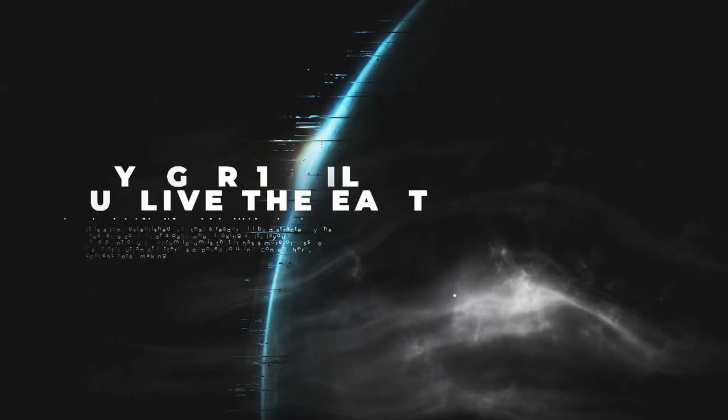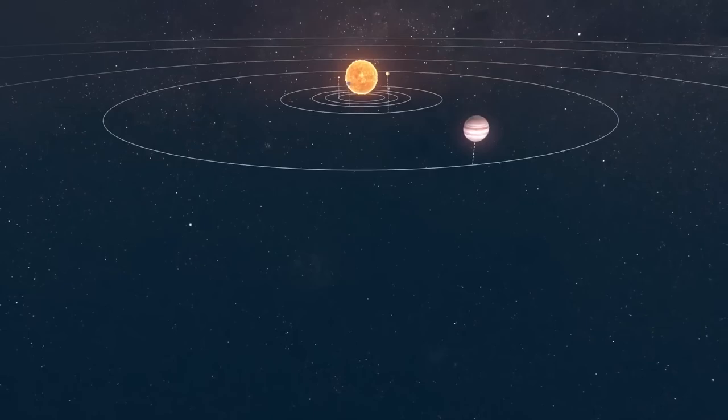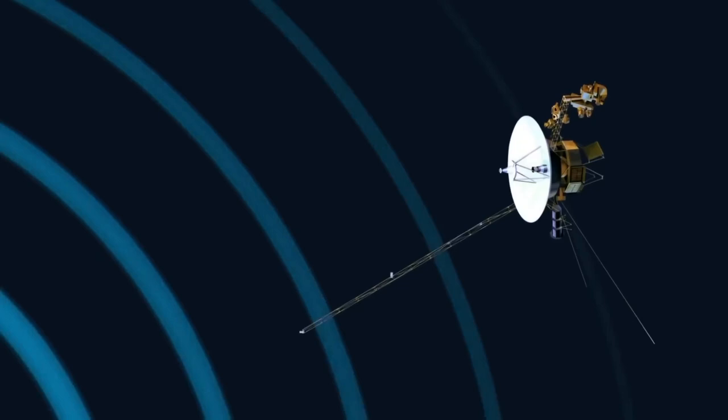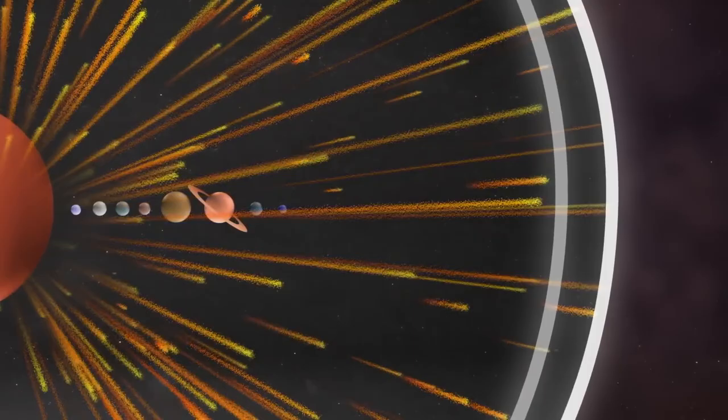Number 10: Voyager 1 will outlive the Earth. Voyager 1 is currently the farthest human-made object from Earth at a distance of nearly 24 billion kilometers or 15 billion miles away. It's already crossed into interstellar space, breaking through the outer boundaries of our solar system.